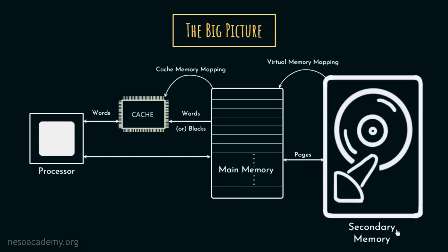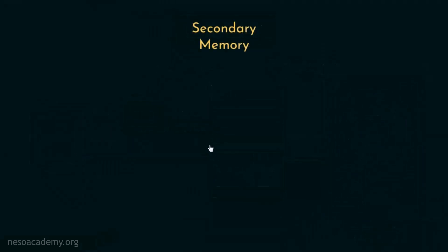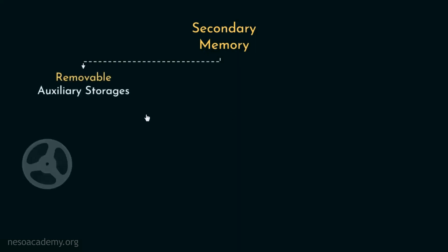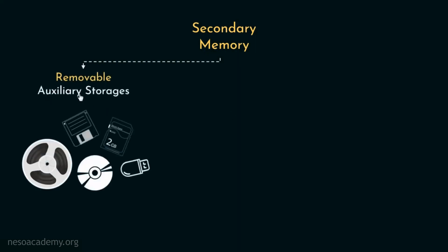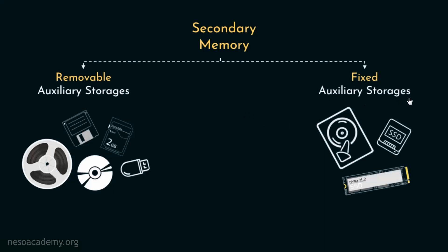Let me walk you through the various types of secondary memories. We can classify the secondary memories in two different categories. The first category is removable auxiliary storages, whereas the second one is fixed auxiliary storages. The first category gives us portability — that is, using these we can easily transfer data from one computer to another.